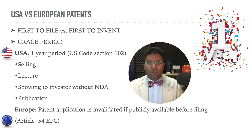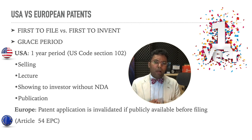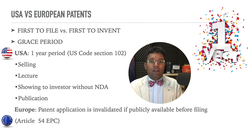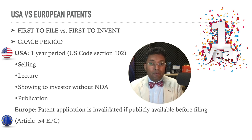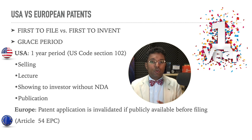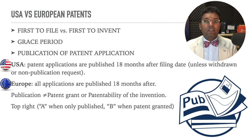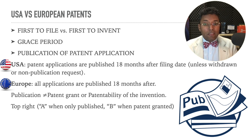Also in the US, you have one year of grace period where you're able to talk about your invention, lecture about it, and even publish some aspects of your invention without affecting your ability to claim the patent. While in Europe, if it is publicly available before the patent is filed, it is automatically void. If you want your patent to also be granted in Europe, make sure you don't publish it in advance. When you apply for a patent, it is automatically published 18 months after filing. In the US, you have a method of not publishing the patent that is not available in Europe.